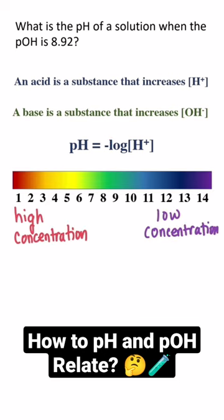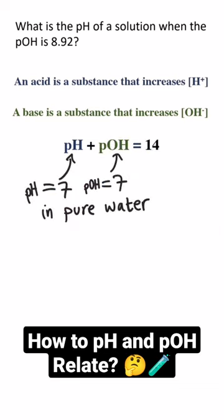In a neutral solution like pure water, the concentration of hydroxide and hydrogen ions are the same. Both are seven.